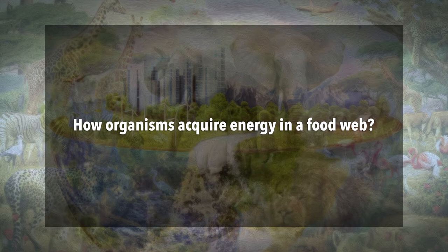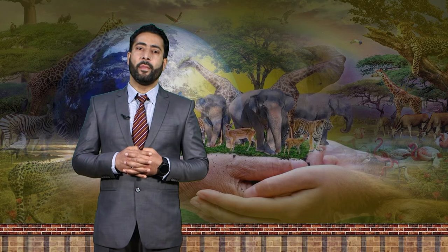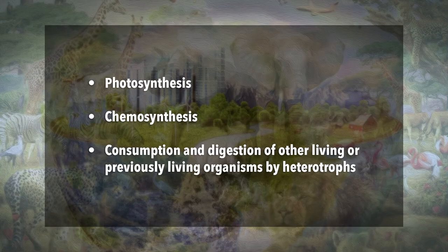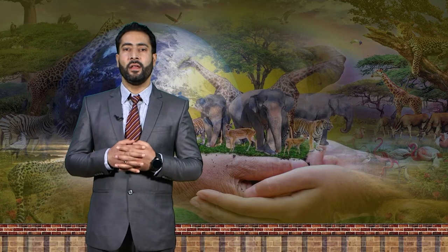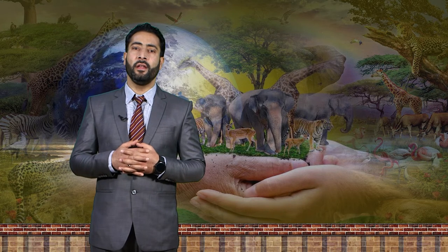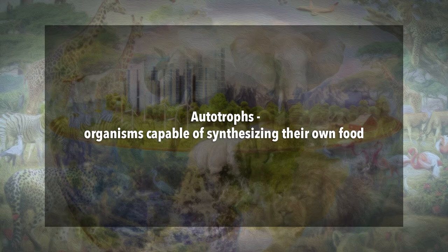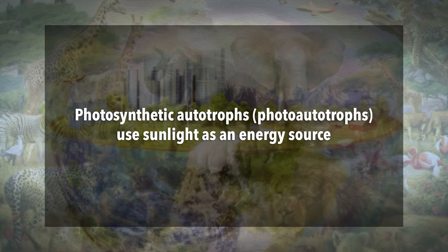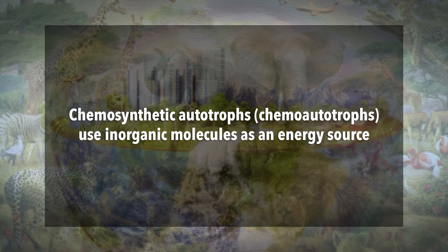How do organisms acquire energy in a food web? Energy is acquired by living things in three ways: photosynthesis, chemosynthesis, and the consumption and digestion of other living or previously living organisms by heterotrophs. Photosynthetic and chemosynthetic organisms are both grouped into a category known as autotrophs — organisms capable of synthesizing their own food, more specifically capable of using inorganic carbon as a carbon source. Photosynthetic autotrophs use sunlight as an energy source, whereas chemosynthetic autotrophs use inorganic molecules as an energy source.